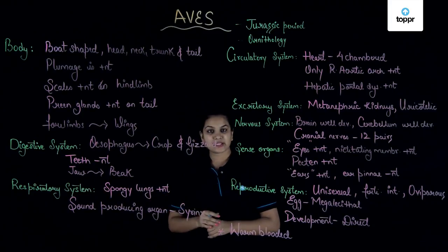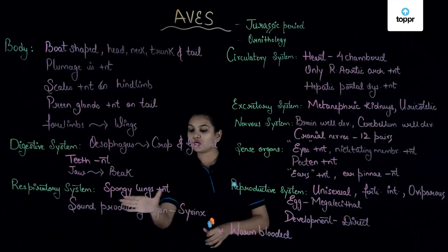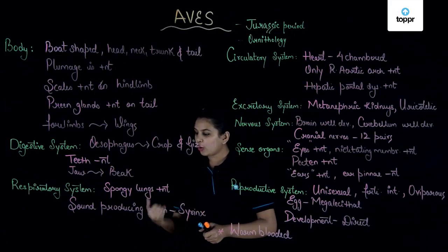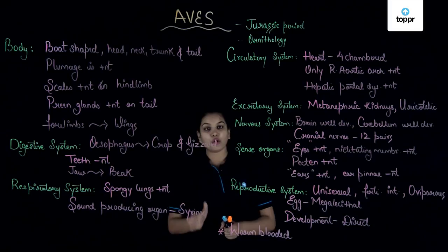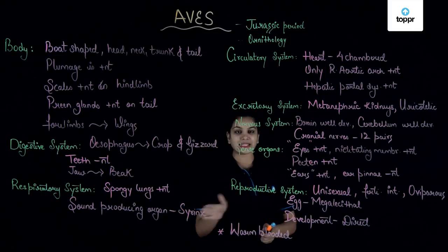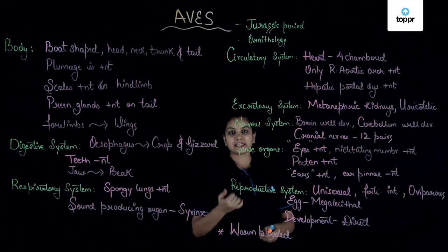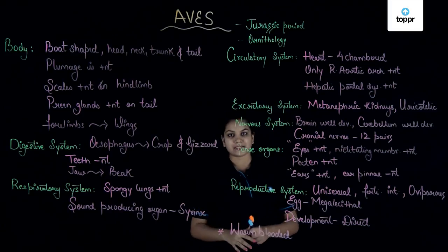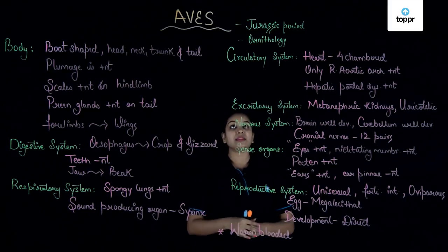Coming to the respiratory system, they have spongy lungs present for respiration. The sound-producing organ in birds is called the syrinx — just as we have a larynx in our throat, birds have a syrinx.